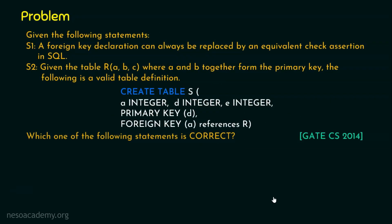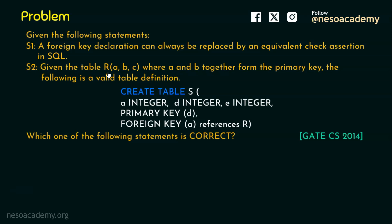The question is: given the following statements — Statement 1: a foreign key declaration can always be replaced by an equivalent check assertion in SQL. Statement 2: given the table R with the attributes A, B, and C, where A and B together form the primary key...